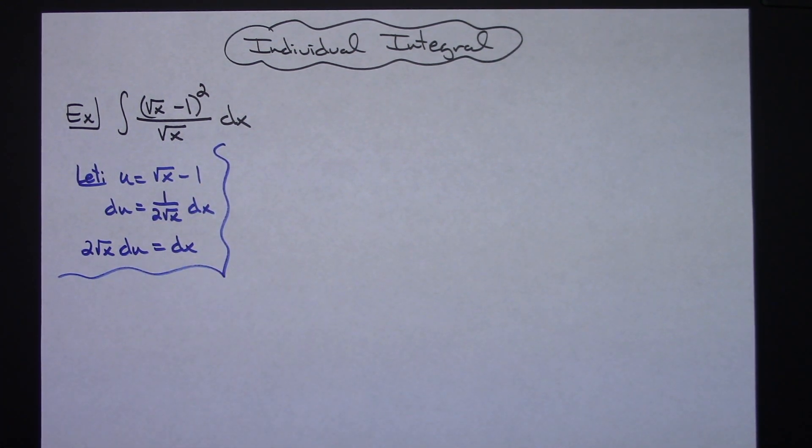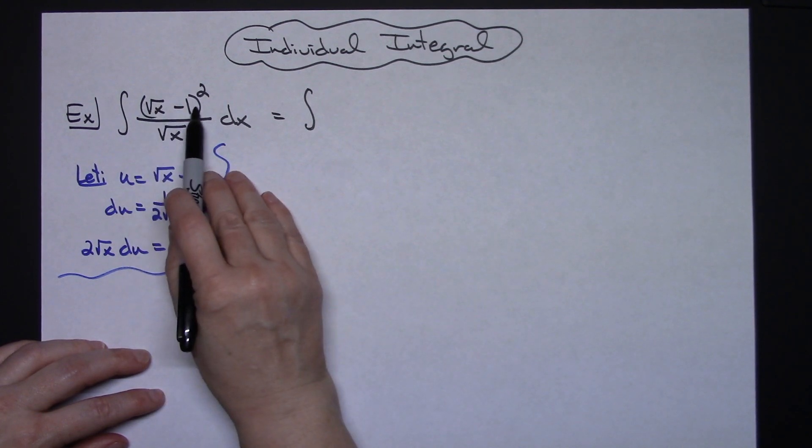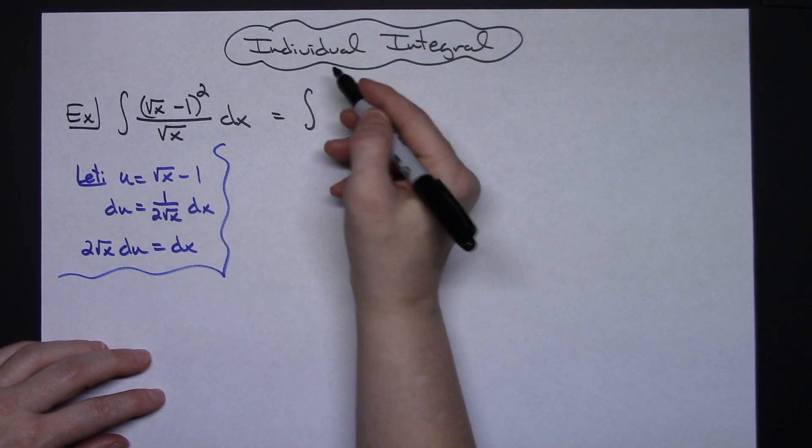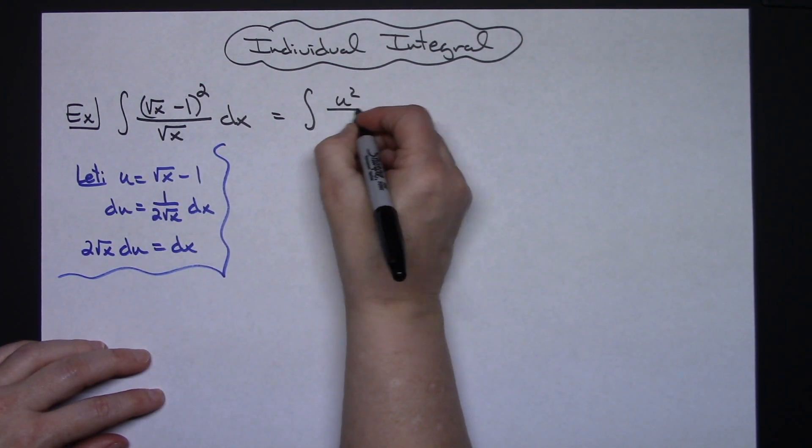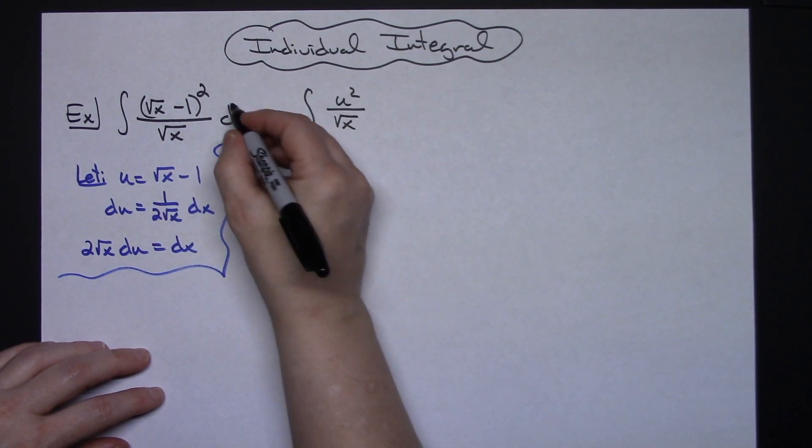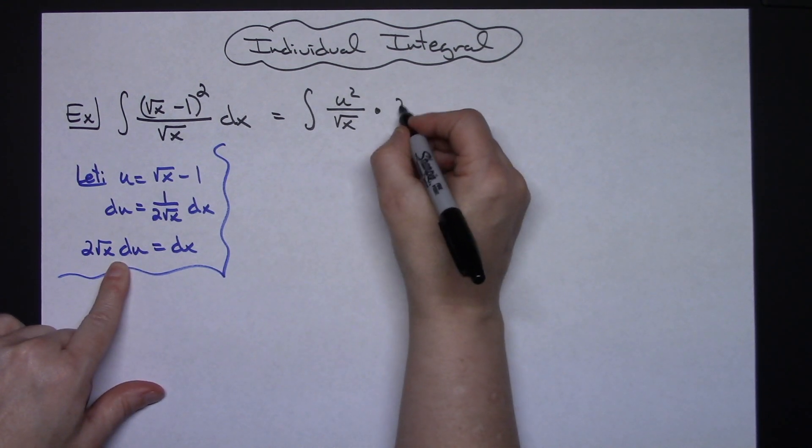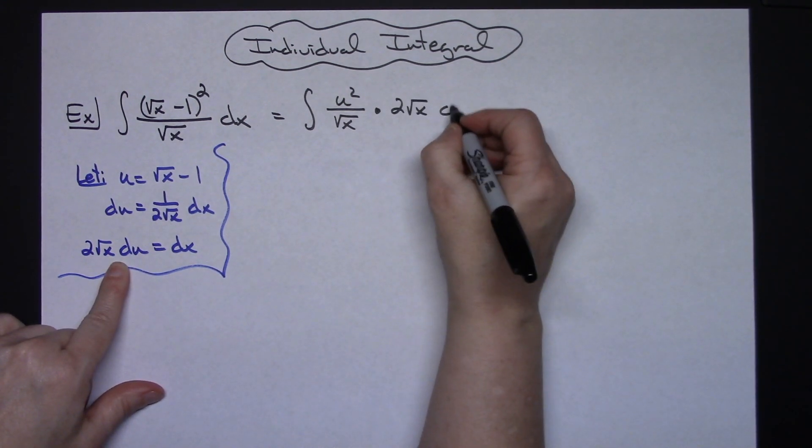So from there then we're going to come up, we're going to take a look at this original integral and we're going to do some substitutions. So we'll have the integral. I'm going to replace the square root of x minus 1 with our u. So we'll have a u squared on top. That square root of x on the bottom will still be there. Then we're going to replace that dx with what it equals. So that's a 2 square root of x du.